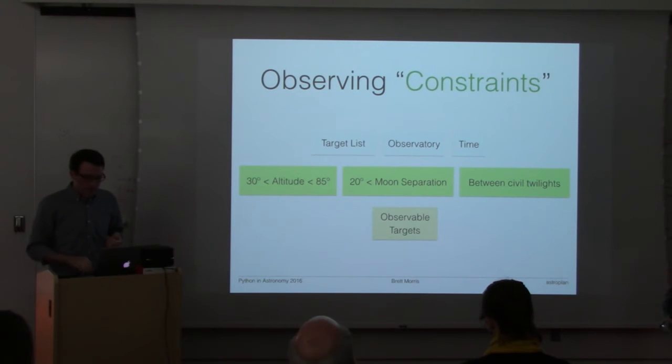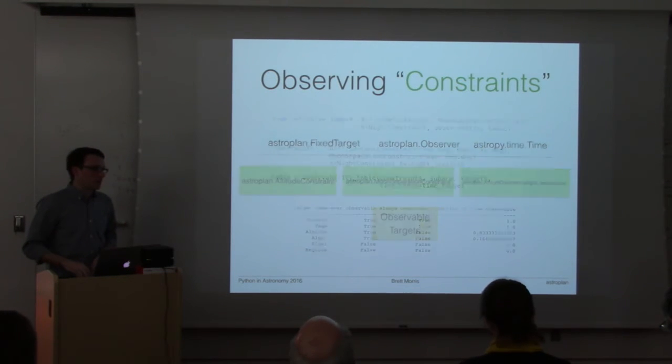Defining those things with AstroPlan has been made as easy as possible. There's a class for each of those types of constraints that you can use to compute when targets are observable given whatever constraints you find in your daily life. So here is that example demonstrated in just a few lines of code.